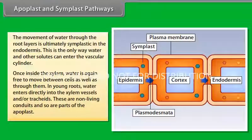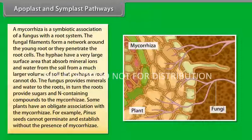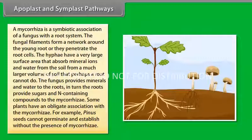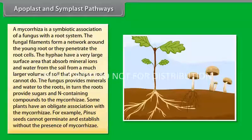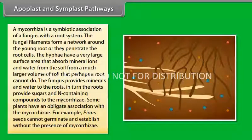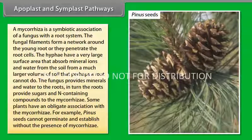Do you know that some plants have additional structures associated with them that help in water and mineral absorption? A mycorrhizae is a symbiotic association of a fungus with a root system. The fungal filaments form a network around the young root or they penetrate the root cells. The hyphae have a very large surface area that absorb mineral ions and water from the soil from a much larger volume of soil that perhaps a root cannot do. The fungus provides minerals and water to the roots. In turn, the roots provide sugars and nitrogen-containing compounds to the mycorrhizae. Some plants have an obligate association with the mycorrhizae. For example, Pinus seeds cannot germinate and establish without the presence of mycorrhizae.